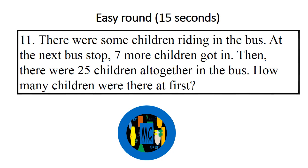Question 11: There were some children riding in the bus. At the next bus stop, seven more children got in. Then, there were 25 children altogether in the bus. How many children were there at first? Go!